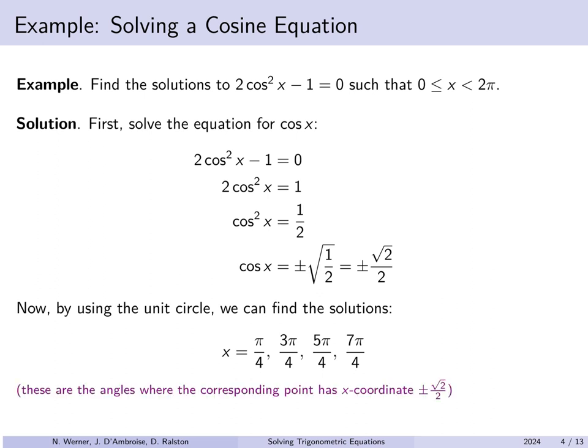These are the angles where the corresponding point has a horizontal x-coordinate of ±√2/2. It's a little unfortunate that we also used x to represent the variable in our cosine function, so x represents an angle here. But the points on the unit circle whose horizontal coordinate is ±√2/2 have corresponding angles π/4, 3π/4, 5π/4, and 7π/4.